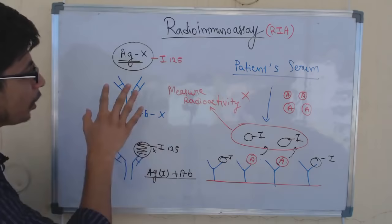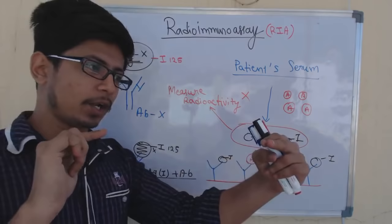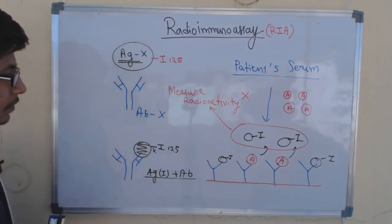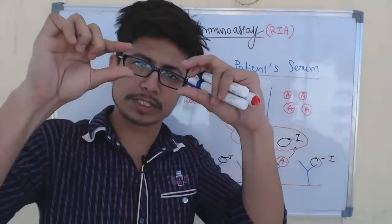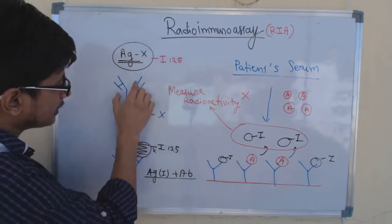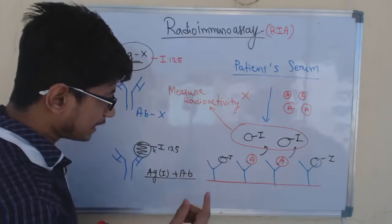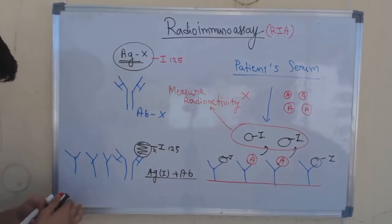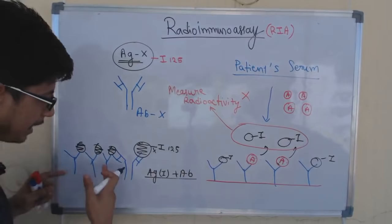We also know that antigen X always tends to bind with antibody X, because antigens always pair with their corresponding antibody — this is known as antigen-antibody complex formation. So we take glass slides, create small wells or grooves in them, and fix antibody X into the base of each well. Then we add the radiolabelled antigen X onto that — so each well has antibody X with iodine-tagged antigen X bound to it. This is how our lab kit or well looks.